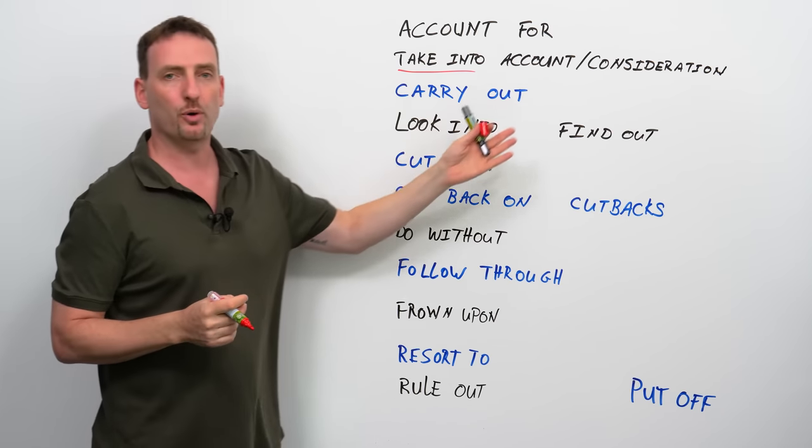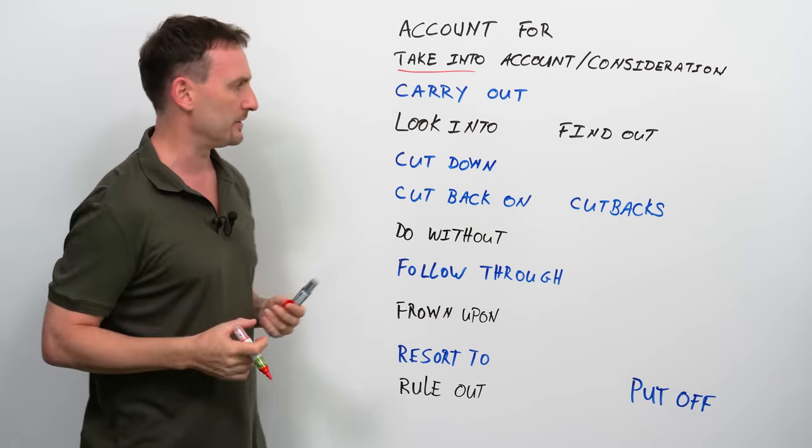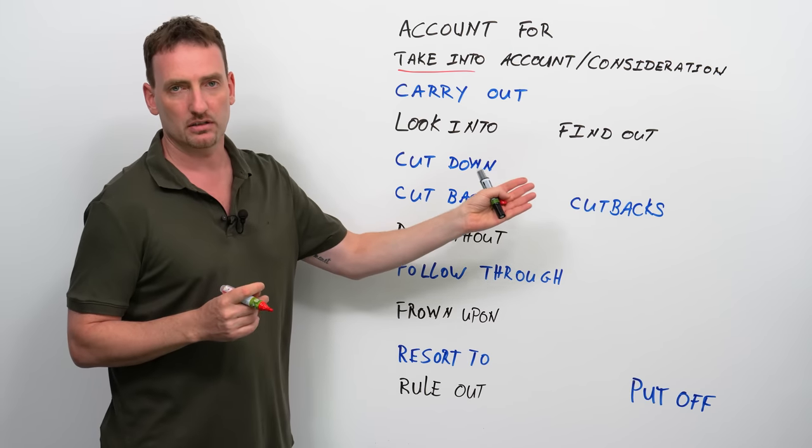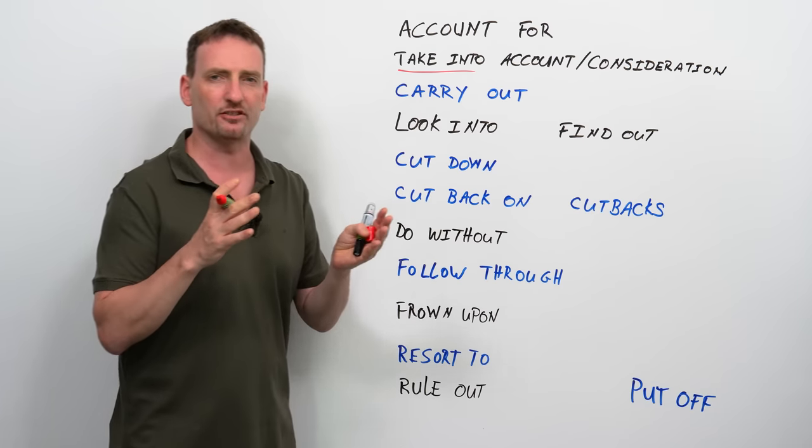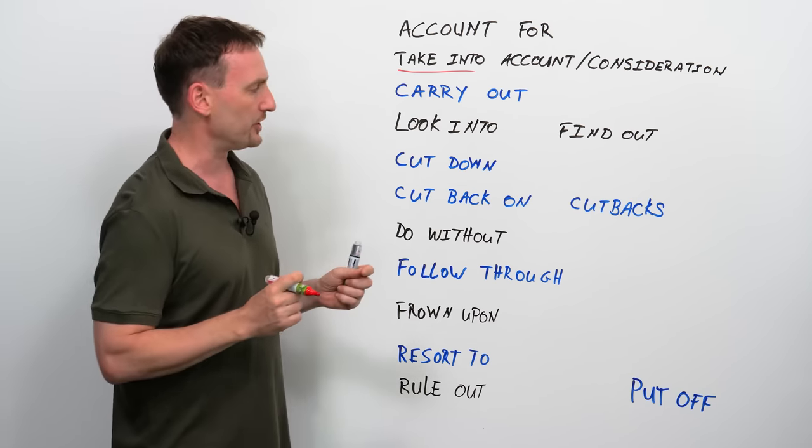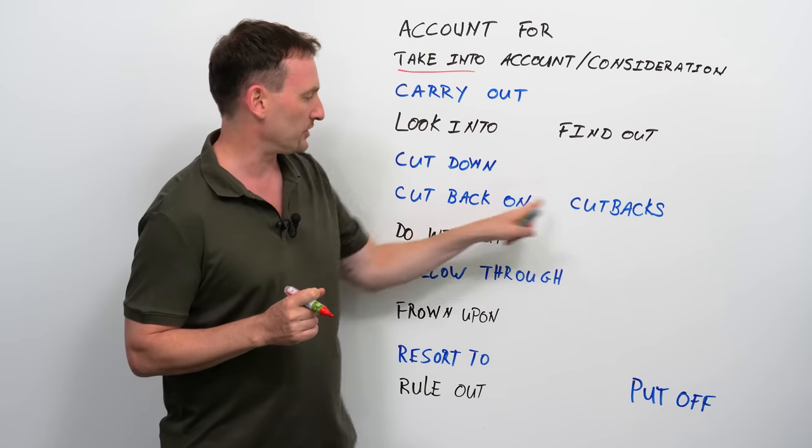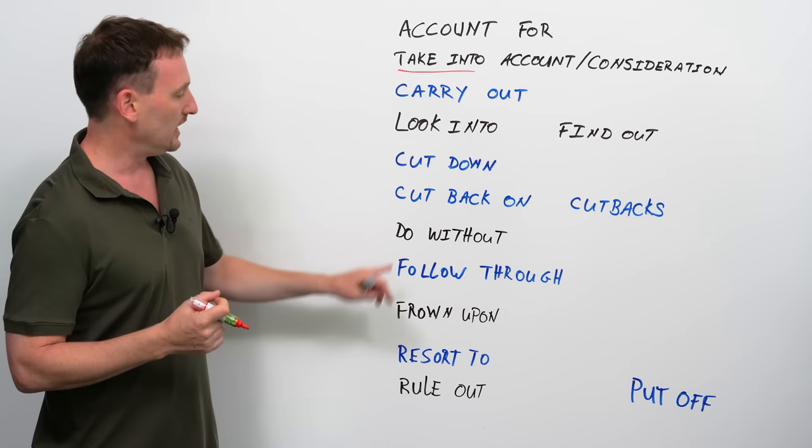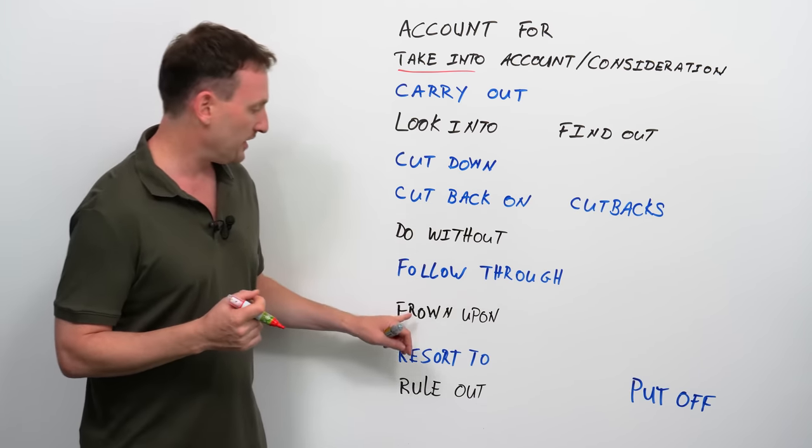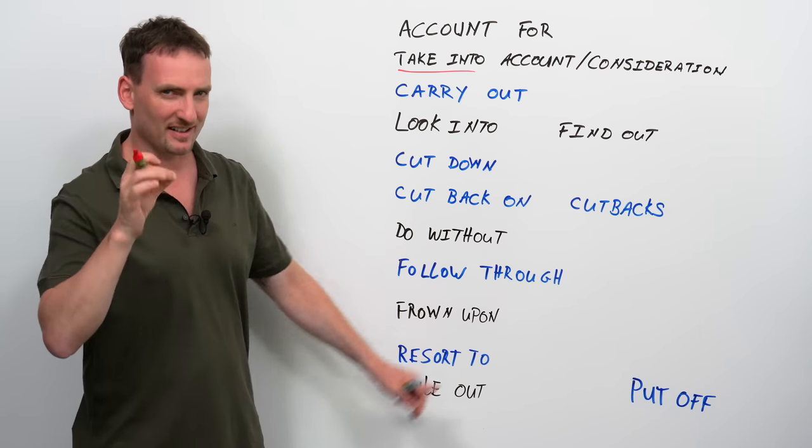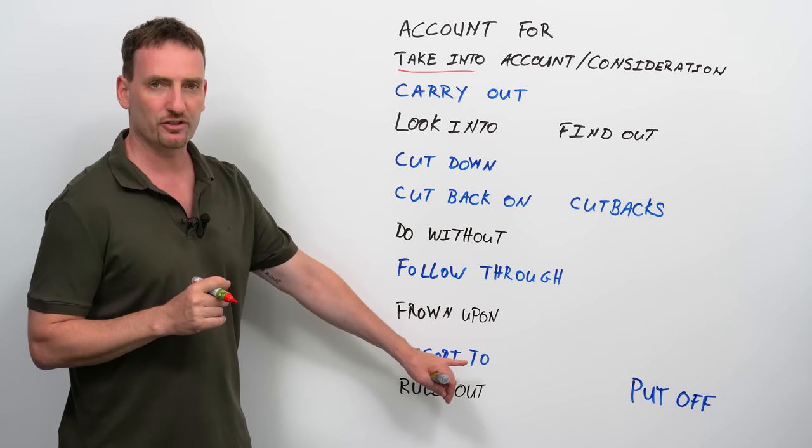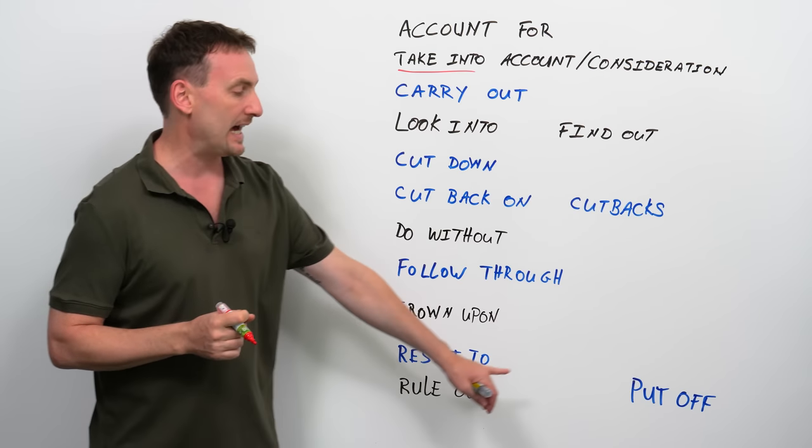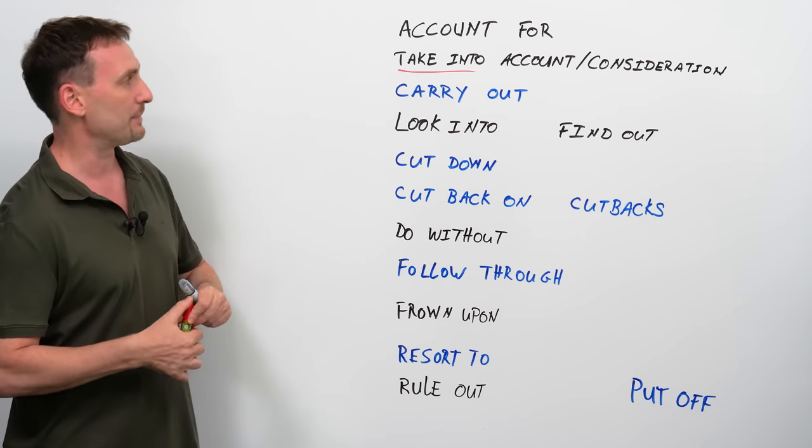Carry out, look into, or find out. These are kind of synonyms. You can use them one or the other. Cut down or cut back on. These are also generally synonymous. You can use them in the same situations, slightly different usage. And just so you know, cut back can also become a noun, cutbacks. Do without, follow through, frown upon, which is a little bit of one of the rare ones, resort to, which should be used more, but people don't use it enough, rule out and put off. So, let's go through each one separately.